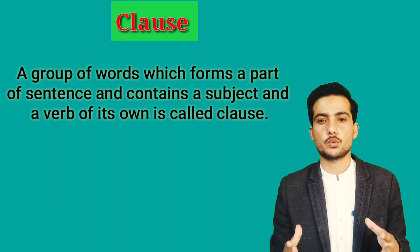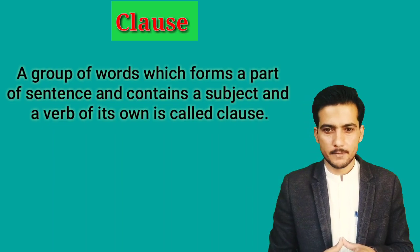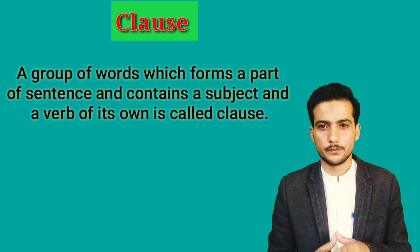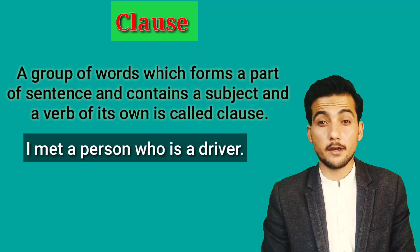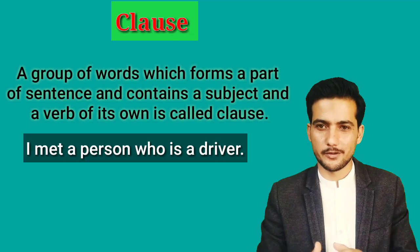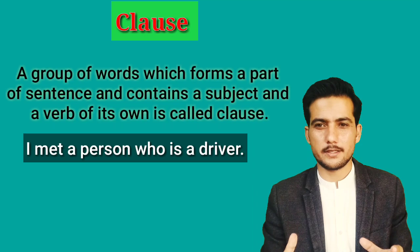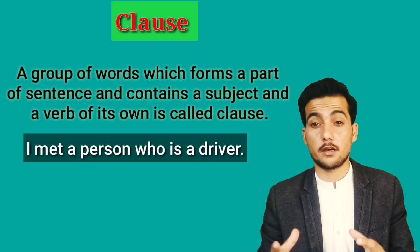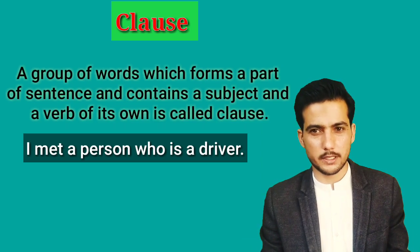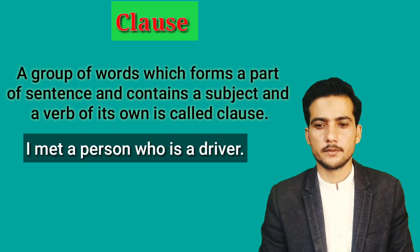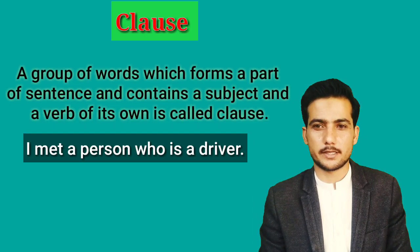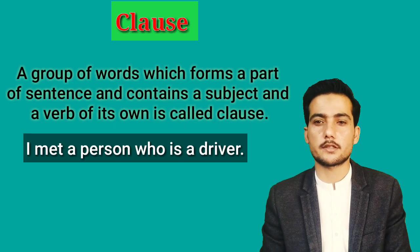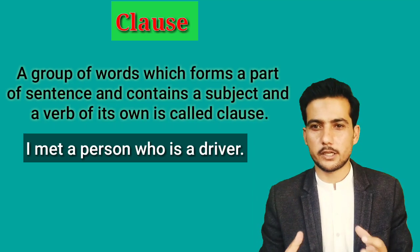From this definition we learn approximately three things: first, a clause will be a part of a sentence; second, a clause will be a group of words; and third, it will have a subject and a verb of its own. For example, 'I met a person who is a driver' — this sentence consists of two clauses: 'I met a person' is one clause, and 'who is a driver' is another clause.